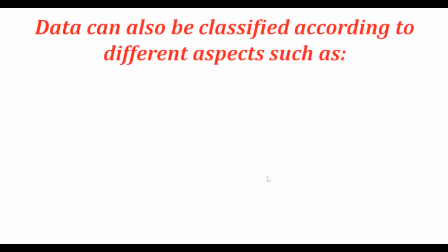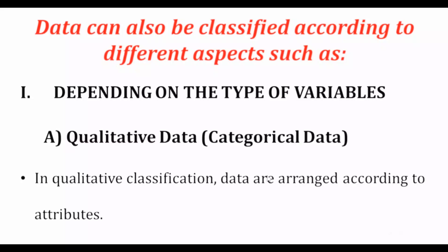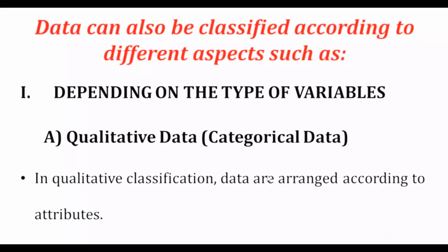You can use the type of variable to group data. Based on the type of variable, data is classified into qualitative and quantitative data. Qualitative data is arranged according to attributes.